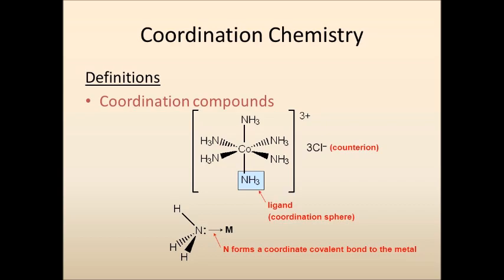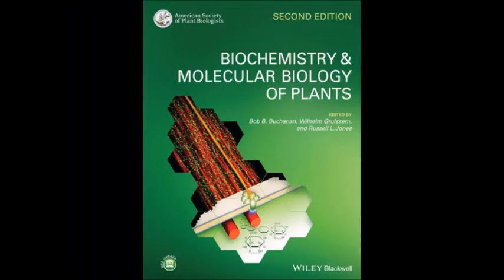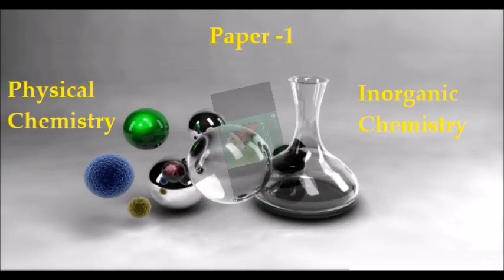The topic of bio-inorganic chemistry requires some good material collection. Bob Buchanan's book on plant molecular biology and biochemistry will be a useful source. Rest of the topics in paper 1 should be covered selectively, provided you have covered the preceding parts well.